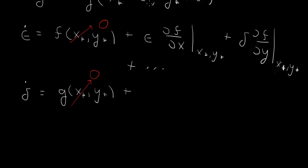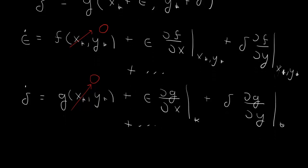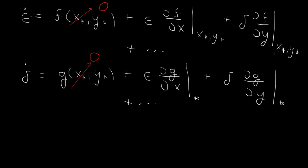So here epsilon partial of g with respect to x at the star variables. Plus delta partial of g with respect to y at the star variables. Plus higher order terms, which we'll throw away.